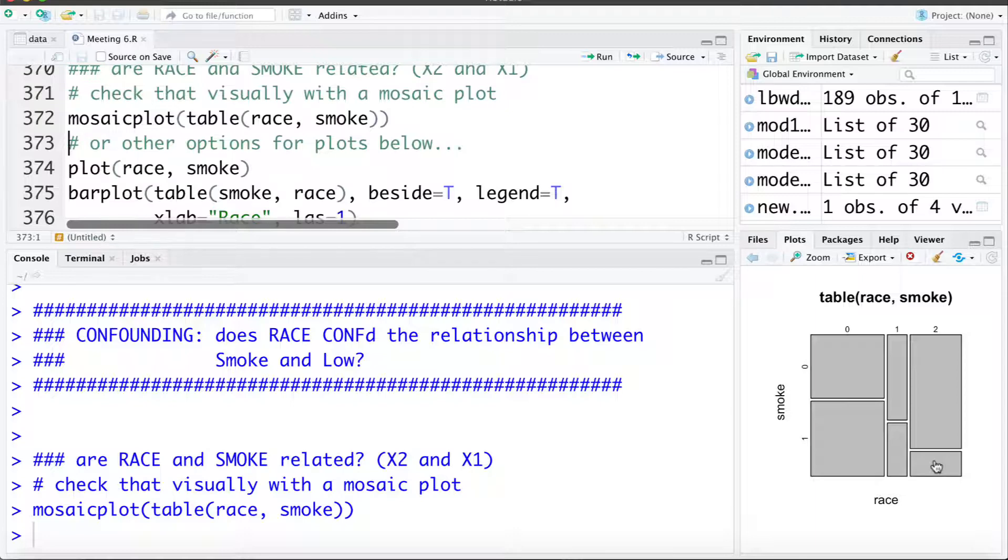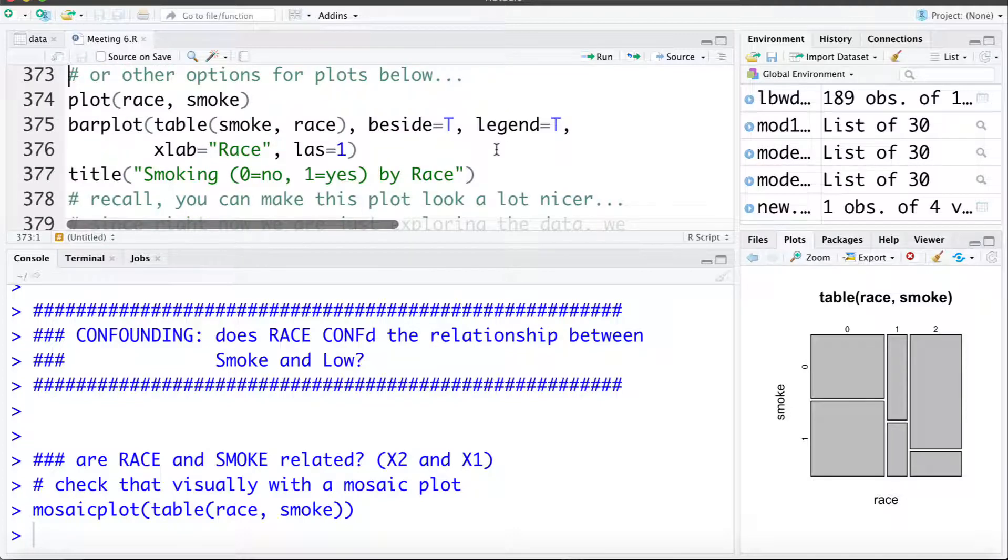So in terms of confounding this is enough for us we don't need to do any more of the stuff that's going to follow but I'm going to show you a few other things just for the sake of discussion and learning how to explore data a bit. So there are other options of plots we can make. I have the code here you can make some of them if you want. We can just make a stacked bar chart or side by side bar charts. Go through and try that out if you want.